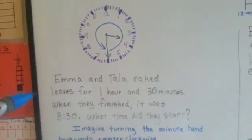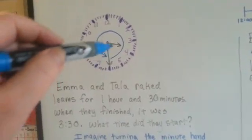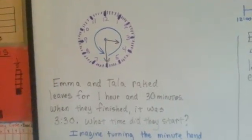Emma and Tala raked leaves for 1 hour and 30 minutes. When they finished, it was 3:30. See, this is 3:30. What time did they start?